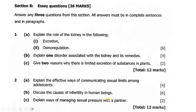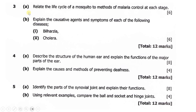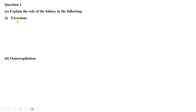Question two essays: (a) explain the effective ways of communicating sexual limits among adolescents; (b) discuss the causes of infertility in human beings; (c) explain ways of managing sexual pressure with a partner. Question three essays: (a) relate the life cycle of a mosquito to methods of malaria control at each stage; (b) explain the causative agents and symptoms of bilharzia and cholera. Question four essays: (a) describe the structure of the human ear and explain the functions of its major parts; (b) explain the causes and methods of preventing deafness. Question five: (a) identify the parts of the synovial joint and explain their functions; (b) compare the ball and socket joint and hinge joint using relevant examples.